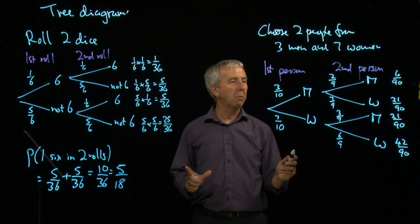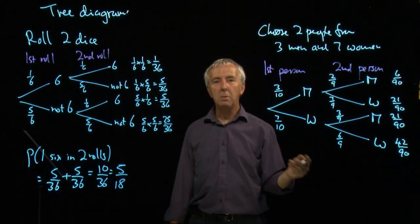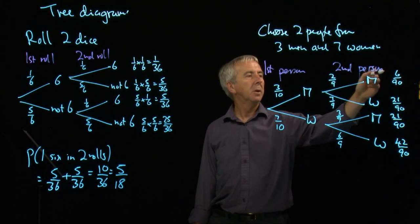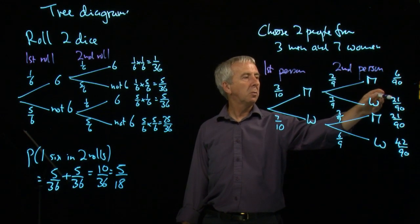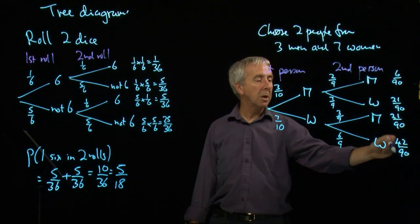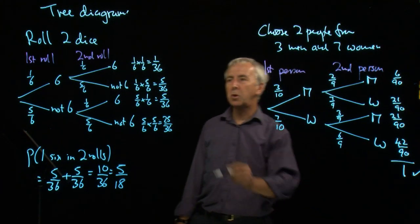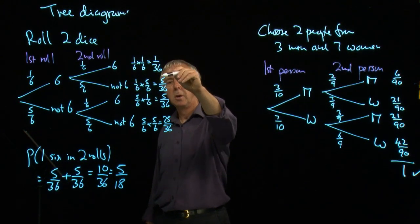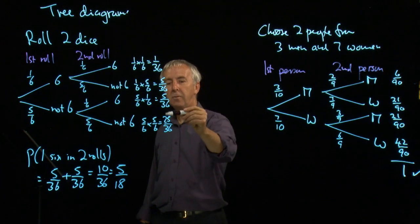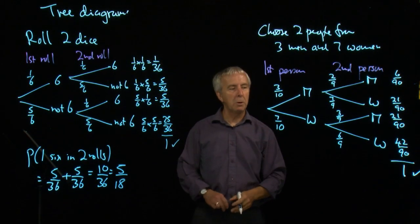You can always check a tree diagram by making sure that all the probabilities add up to one. We must have got one of these outcomes. So here we have six and twenty-one is twenty-seven, forty-eight and forty-two is ninety-ninetyths. So those do add up to one. We could have checked that here. How many thirty-sixths? One and five is six, eleven and twenty-five is thirty-six thirty-sixths. And it adds up to one, so they're okay.